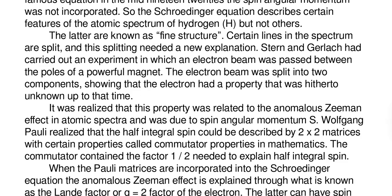The latter are known as fine structure. Certain lines in the spectrum are split, and this splitting needed a new explanation. Stern and Gerlach had carried out an experiment in which an electron beam was passed between the poles of a powerful magnet. The electron beam was split into two components, showing that the electron had a property that was hitherto unknown at that time.